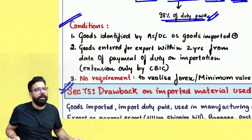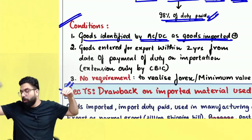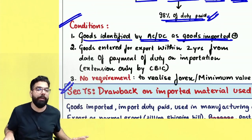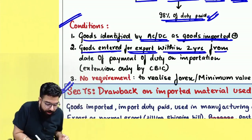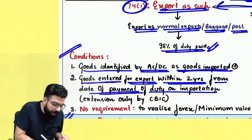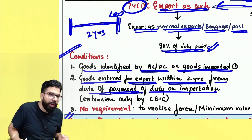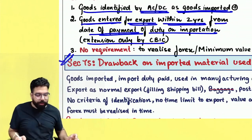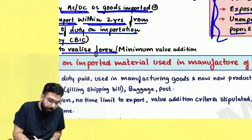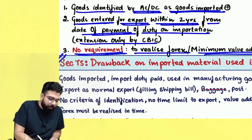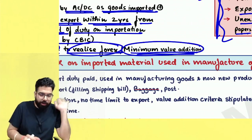Conditions under section 74: Goods will always be identified by the AC or DC as the goods which were imported, since only what you imported can be exported. Secondly, goods should be entered for export within 2 years from the date of payment of duty on importation; extension can only be given by CBIC. There is no requirement to realize foreign currency and no minimum value addition criteria.